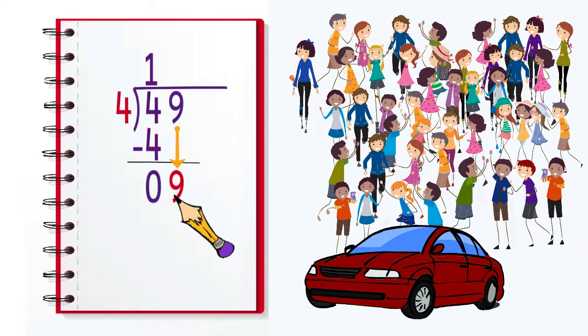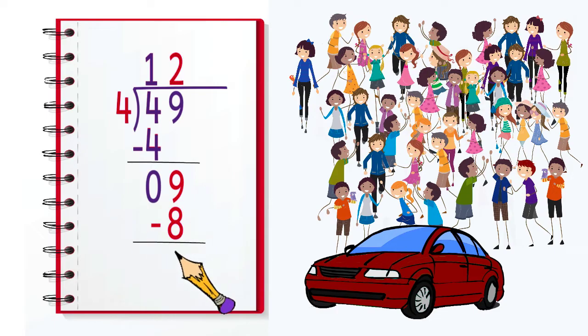Then we bring down the nine and see how many times four goes into nine. Well, that would be two, and two times four is eight. We subtract eight from nine, getting one left over, which can be written as the remainder equals one.